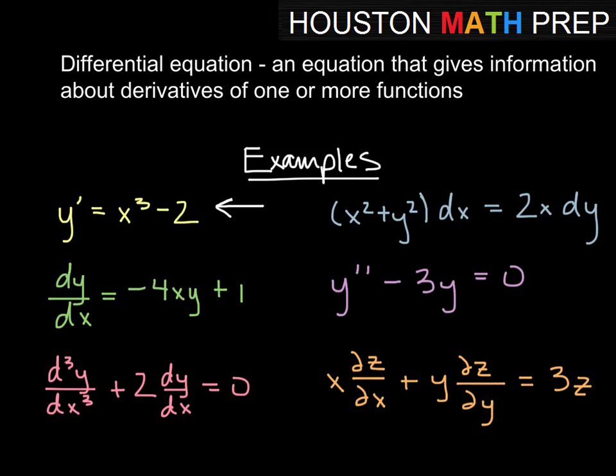Sometimes we may have an implicit expression, where the derivative of some function is actually in terms of itself. We may have, as we have both here and here, what we would call higher order derivatives. This y double prime means that we have the second derivative of y. And down here, this d cubed y over dx cubed means we have the third derivative of y.